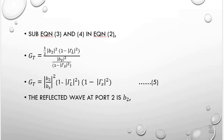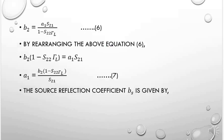The reflected wave at port 2 is b2, where b2 equals a1·S21 divided by (1 minus S22·gamma_L). Rearranging this equation, b2·(1 minus S22·gamma_L) equals a1·S21. Therefore, a1 equals b2·(1 minus S22·gamma_L) divided by S21.